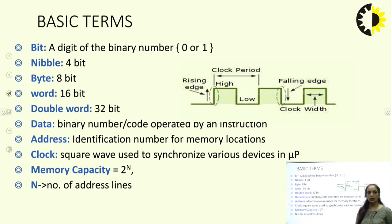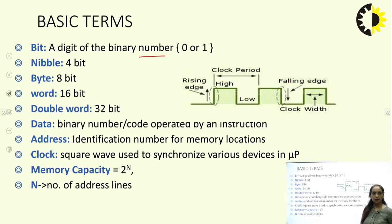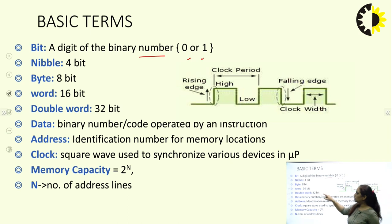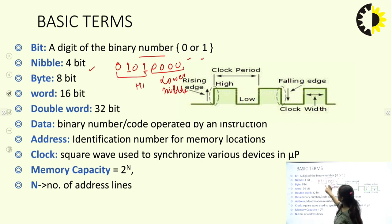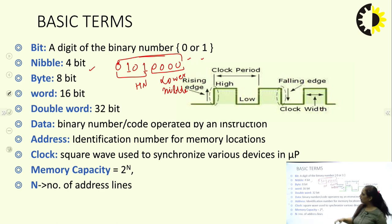There are some basic terms used in microprocessor study. A bit is a digit of a binary number, either 0 or 1. A nibble is a combination of 4 bits — for an 8-bit data like 01010000, the lower 4 bits form the lower nibble and the upper 4 bits form the higher nibble.